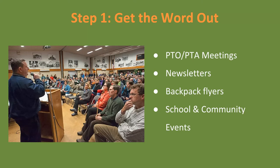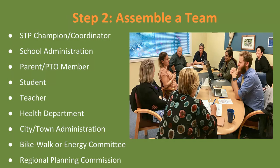The first step is really how do you build excitement around this in your school community? Finding a champion — some of you may be the champions leading these efforts in your PTO, working closely with the town, with your regional planning commission, and then starting to assemble a team. This list shows different types of folks you might want to bring to the table. You certainly want school administration and that champion to spearhead the efforts. Maybe even more than one champion — the diversity of perspectives and expertise makes the planning process more effective.